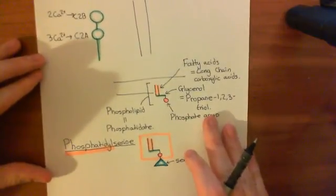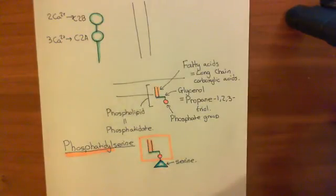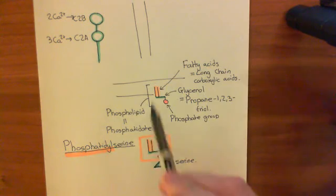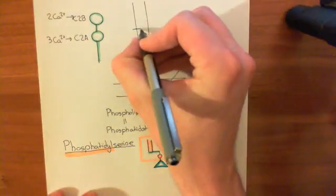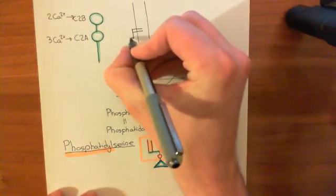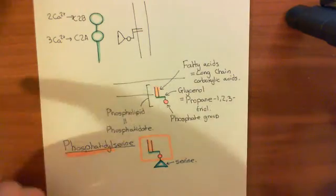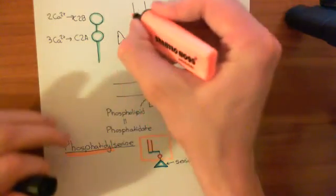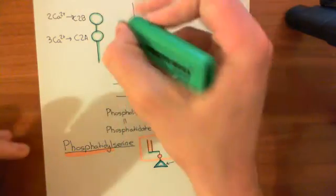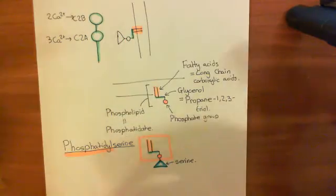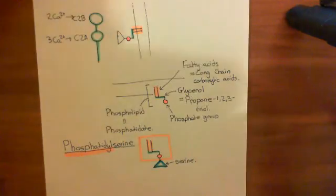Now, why is this important? The C2A domain of synaptotagmin is going to bind to the phosphatidylserine molecules which are in the phospholipid bilayer. Let me draw one of these: here is our phosphatidylserine molecule, with the long-chain carboxylic acids forming the hydrophobic tails, the glycerol backbone here in green, and the phosphate head in red.